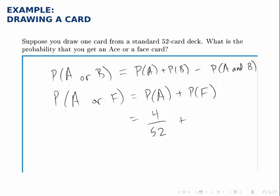The face cards, there are 3 face cards for each suit, the jack, queen and king, and 4 suits total, so that's a total of 12 face cards out of 52.